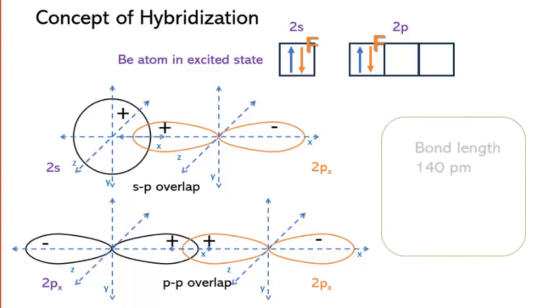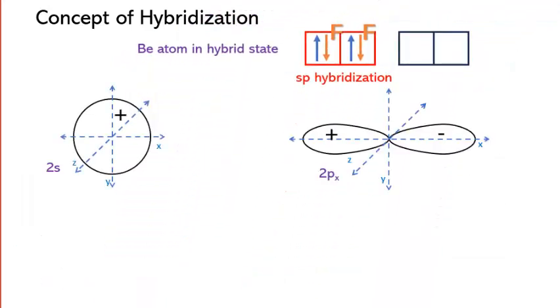Experimentally, bond length and bond energy for these two fluorine atoms are the same. So we can discard this theoretical approach.